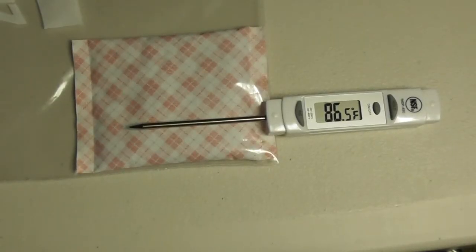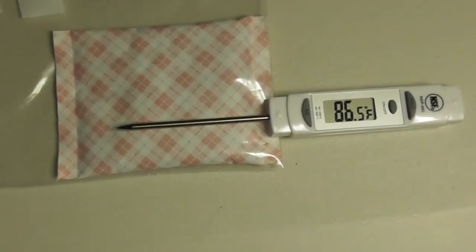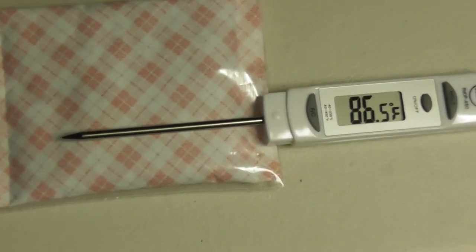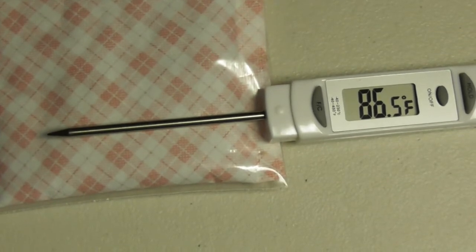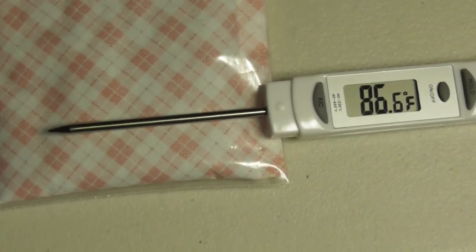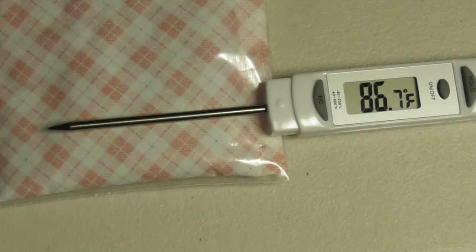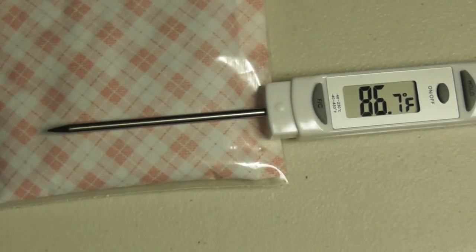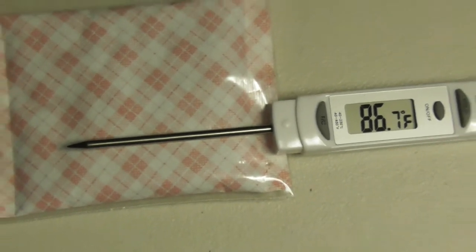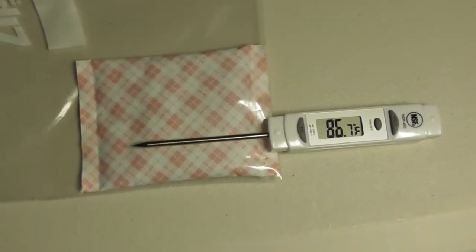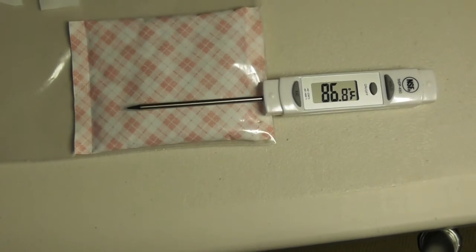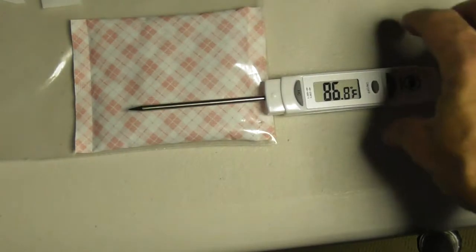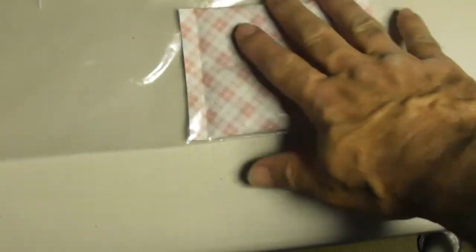After about 10 minutes, we're down to 86.5 degrees or so, and the room in here is somewhere about 80 something. So, this is the way that you can extend the life of these air activated heat warmers. Just put it in a Ziploc bag. Make sure the air is completely out of there. You don't want any air at all to be able to get into this thing.